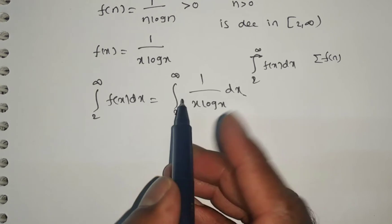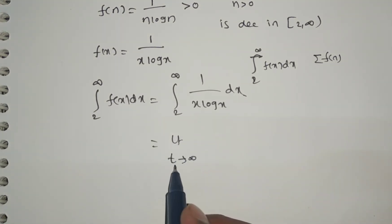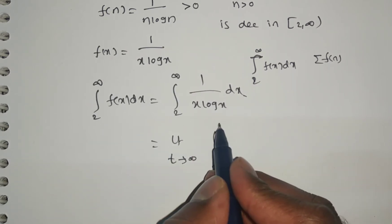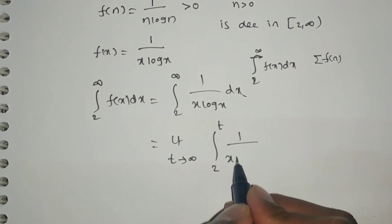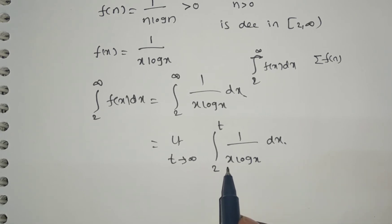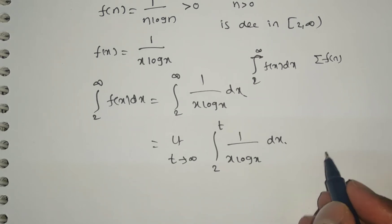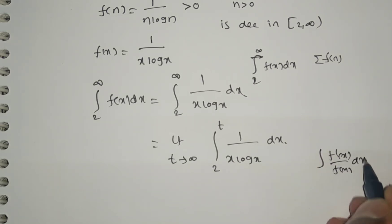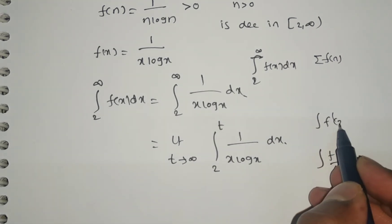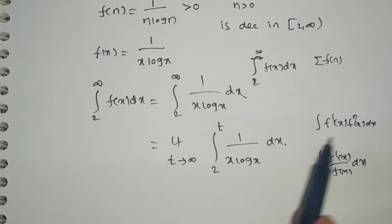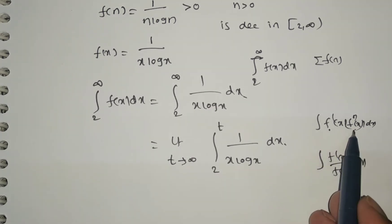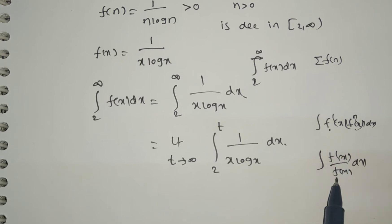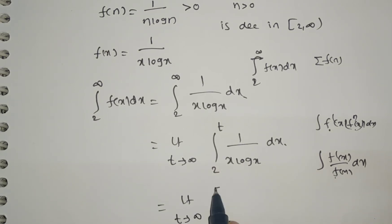This is an improper integral, so we take the limit as t tends to infinite. That is, the limit as t tends to infinite of the integral from 2 to t of 1 by x log x dx. Now, we have 1 by x log x — a product of two functions in the denominator. We have a formula of the form f-dash of x by f of x dx. If the derivative of the denominator is in the numerator, then the integral is log of the denominator. So we write this as the integral from 2 to t of 1 by x times log x dx.